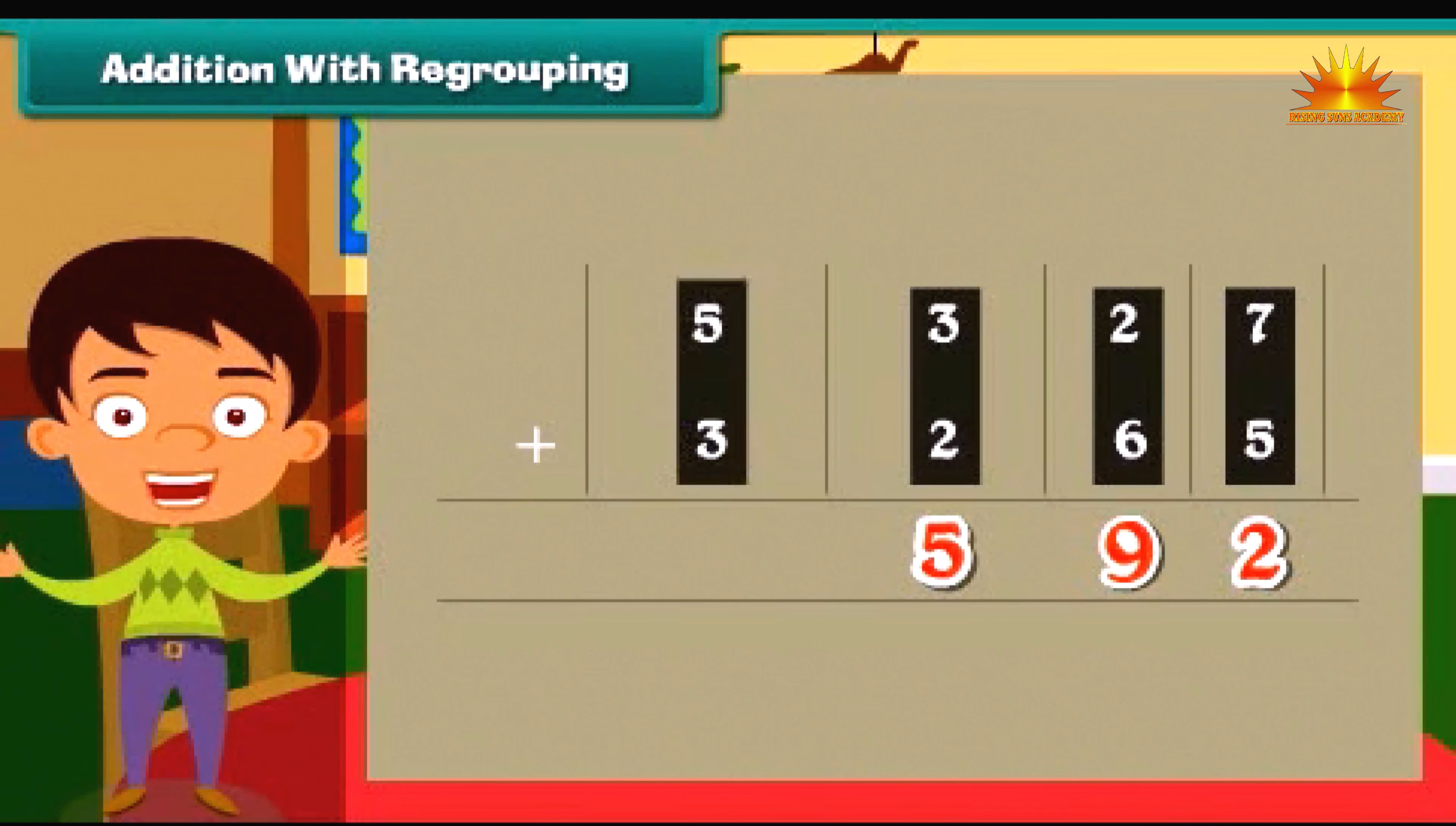Similarly, add thousands. We get the answer as eight. Therefore, addition of 5327 and 3265 is equal to 8592.